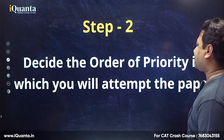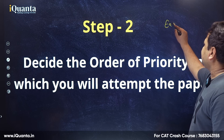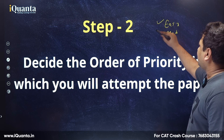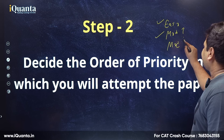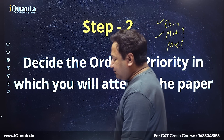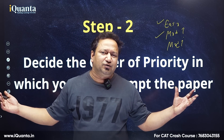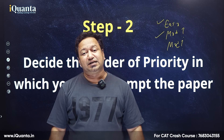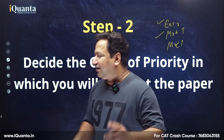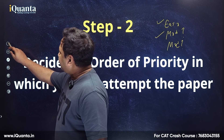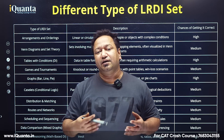Step 2 is to decide the order of priority in which you will attempt the paper. First is obviously easy, then moderate. If you do all of the moderate correctly, great. If you do only half, then look at half of another moderate set. You will always have at least one moderate and one easy set. And remember — if somehow the paper is very difficult, it's not difficult just for you; it's difficult for everyone.